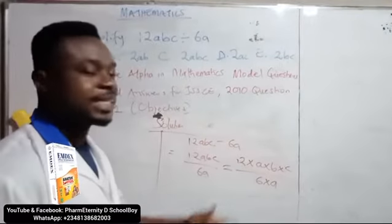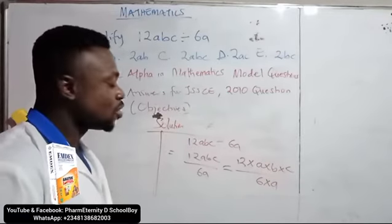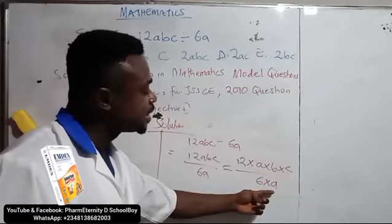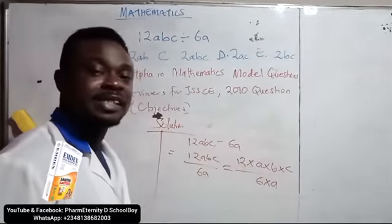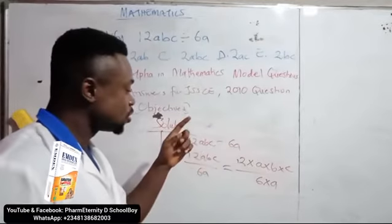At this point now, we can easily cancel out and know what is remaining. Whatever is in the denominator, we cancel out its like terms in the numerator.